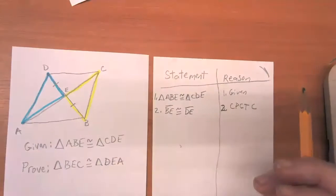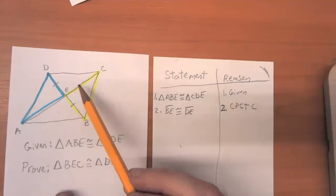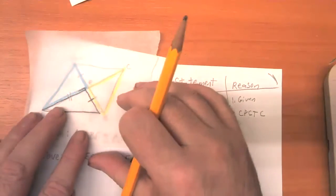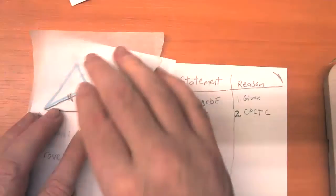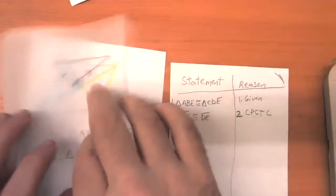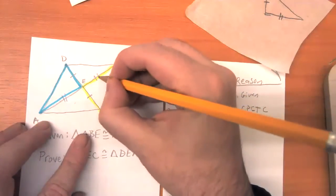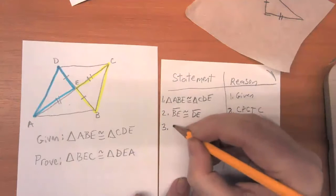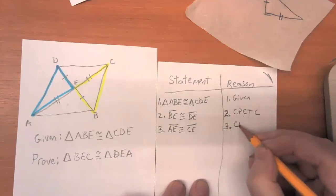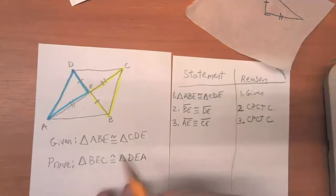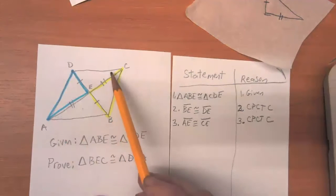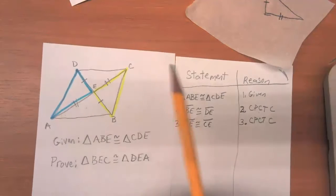Are there any other sides that I'm interested in showing, knowing that this bottom triangle is congruent to the top triangle? What about that blue side there? That's the side of the bottom triangle. So what's the corresponding side in the top triangle? Once again, I do that rotation, and it lines up with line segment CE. So AE is congruent to CE — because corresponding parts of congruent triangles are congruent. I could also show that the angles are congruent — this angle down here is congruent to this angle up here, because they correspond to each other when I do that rotation.